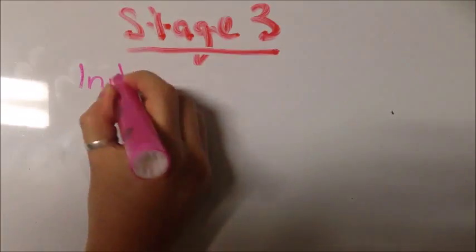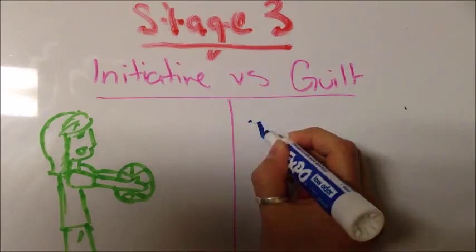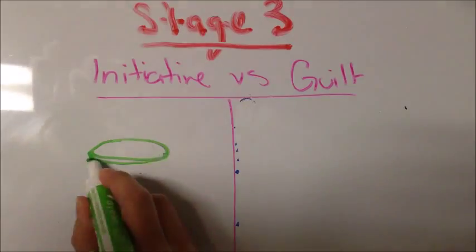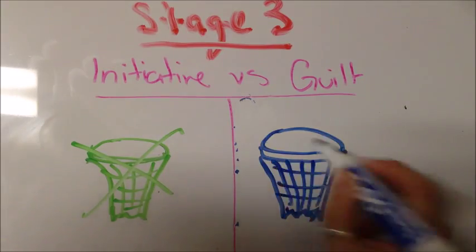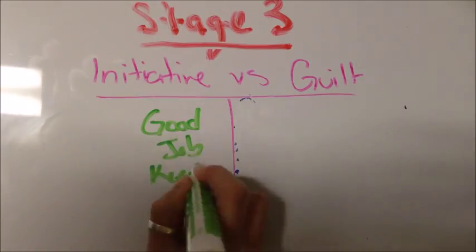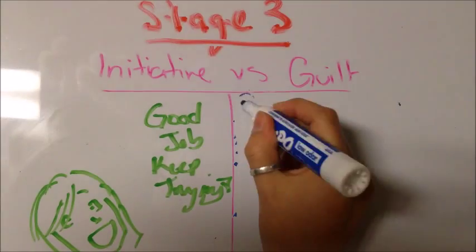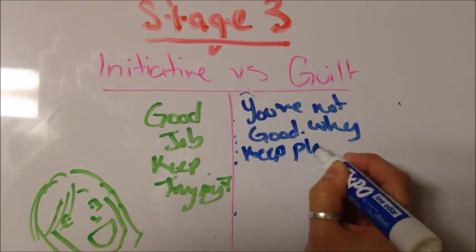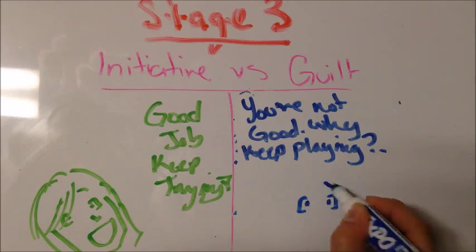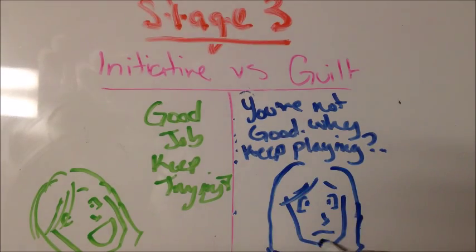Stage 3, Initiative versus Guilt. This stage happens during preschool years when preschoolers are beginning to pursue activities, for example, playing basketball. If parents support the child's efforts, the child will gain initiative in these activities. However, if instead the parent discourages them in their attempts, the child can develop guilt about their desires and failed attempts.